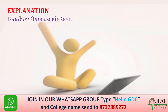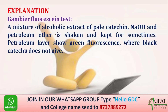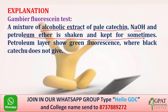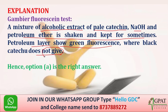In the Gambier fluorescence test, a mixture of alcoholic extract of pale katechu, NaOH, and petroleum ether is shaken and kept for some time. The petroleum layer shows green fluorescence. Black katechu does not give any fluorescence. So pale katechu gives green fluorescence and the correct answer is option A.